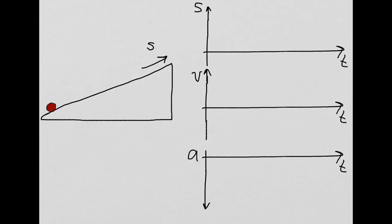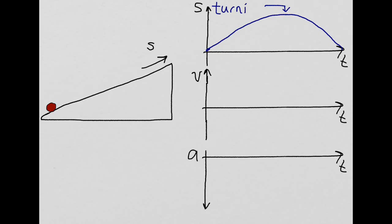Starting at the bottom, at time t equals zero you're at s equals zero. You go up, slow down, and then turn around and come back down. This very top point is called the turning point — it's when you reach the highest point on the ramp. After that, you start coming back down again.